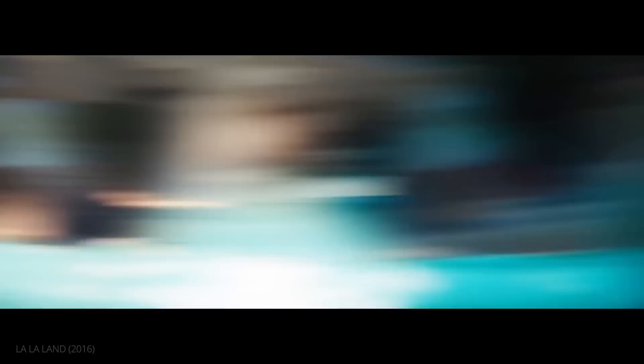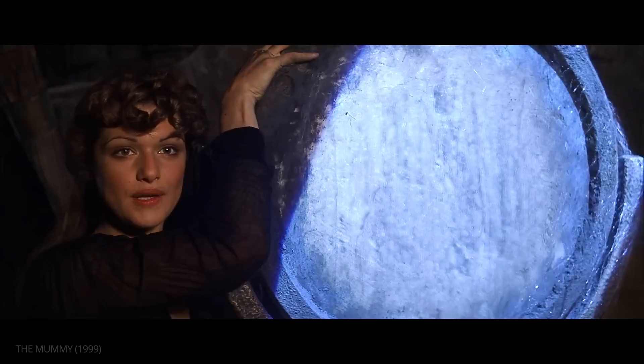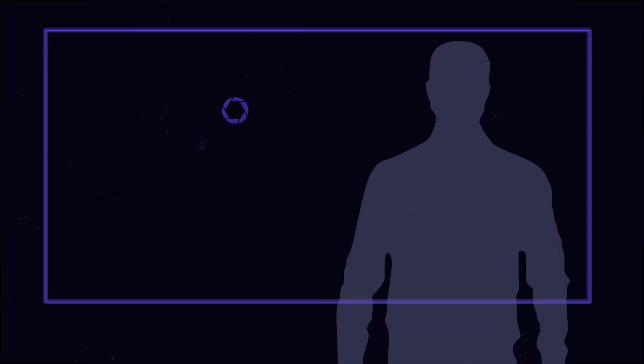In previous episodes, we covered camera movement, editing techniques, and composition. Today, we'll focus on lighting fundamentals — from different types and qualities of light to essential lighting terms and gear. This is episode 12 of The Shot List: Cinematic Lighting, Part 1.